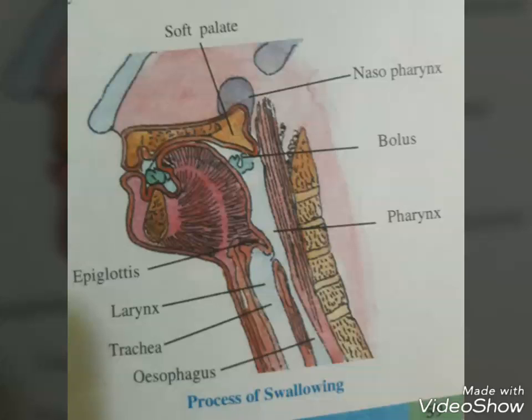The general organization of the human digestive system is shown in figure 16.1. The human digestive system consists of the alimentary canal and the associated glands. The alimentary canal begins with an anterior opening, the mouth, and it opens up posteriorly through the anus.